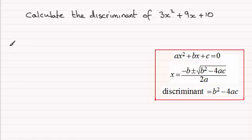So for this question then, let's just put down what that discriminant is. The discriminant is equal to b² - 4ac where we've got our value of a is 3, b is 9, and c is 10.